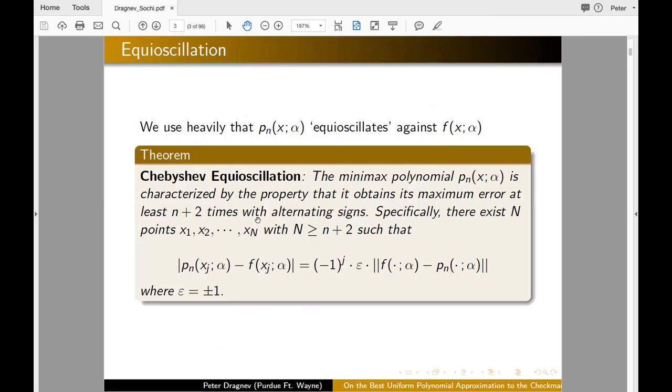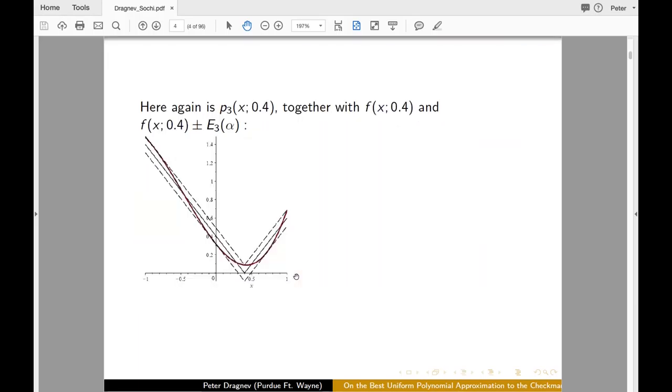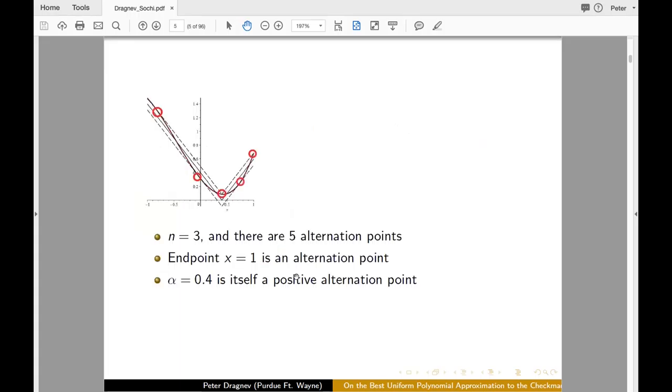And heavily, it's involved the Chebyshev equi-oscillation theorem. Namely, if you have minimax polynomial P_n of degree n to a certain function, then the maximum norm is attained at least n plus two times alternation of that maximum. Actually, that shouldn't have been absolute value. I apologize. So looking at this particular example, again, we see that we have degree three and five alternation points. The endpoint is one of the alternation points and alpha 0.4 is also a positive alternation point. Namely, that the value here is positive.